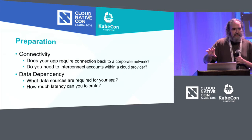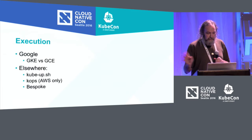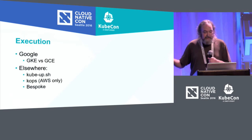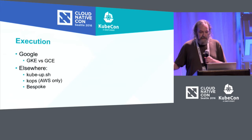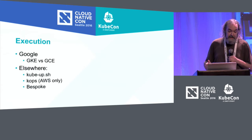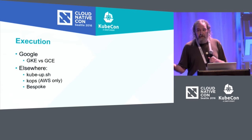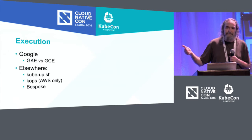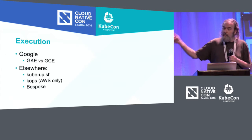Once you figure out what your data dependency is, what cloud you're going to land in, and learn all of that, you can figure out how you're going to get your cluster up and running. In Google, you've got GKE, obviously, and it's great — you can get a cluster up and running in just a couple of minutes. But if you need more configuration and customization, you'll want to go with GCE or another cloud entirely. For automation, you'll probably want to use something based on KubeUp or KOPS.